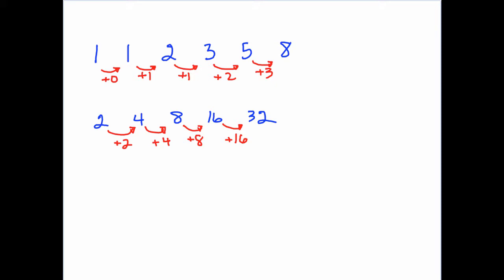Looking at the other two sequences, the differences are not common. In the Fibonacci sequence, the differences are 0, 1, 1, 2, 3 — they're not the same, so there is not a common difference. In the doubling sequence, the differences are 2, 4, 8, 16 — this is not an arithmetic sequence.